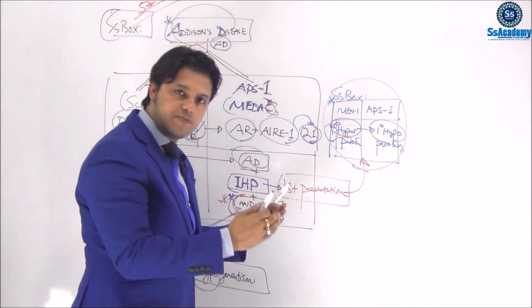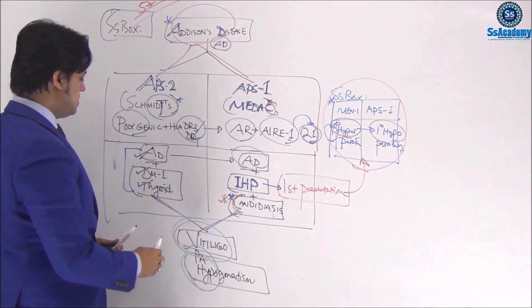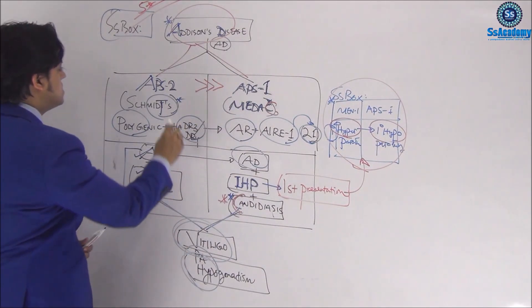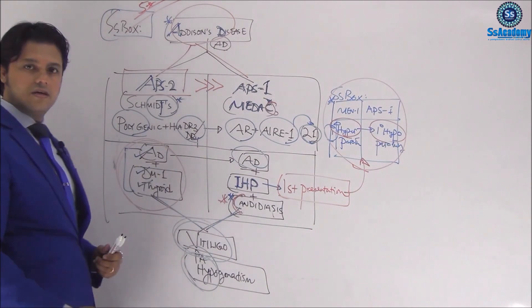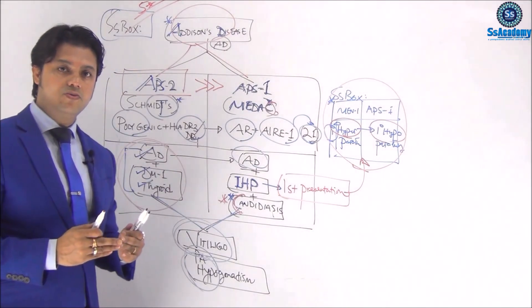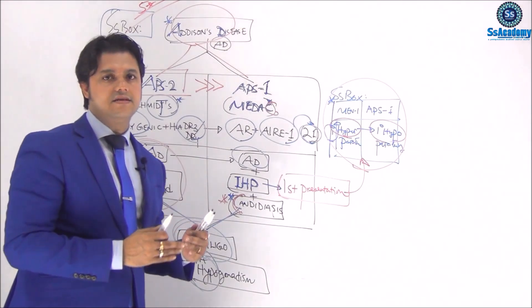...and APS type 1 is hypoparathyroidism. Type 2 is more common than APS type 1, which is why we discuss APS type 2 first. This is autoimmune polyglandular syndrome: adrenalitis or adrenal gland disease, thyroid disease, and type 1 diabetes.